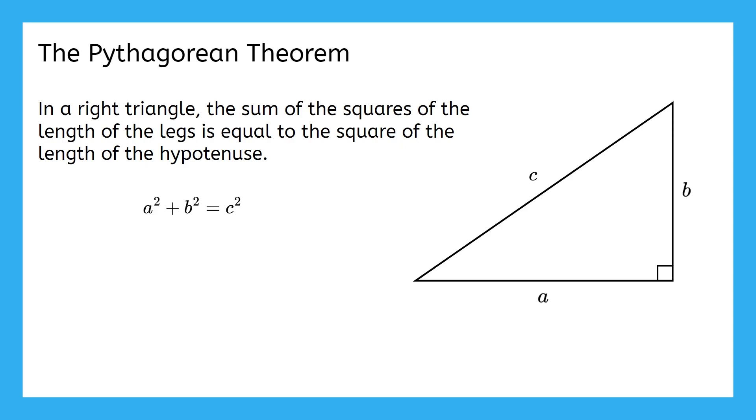For example, here's a super common right triangle, the 3-4-5 triangle. It's true that 3 squared plus 4 squared equals 5 squared, since 9 plus 16 equals 25.